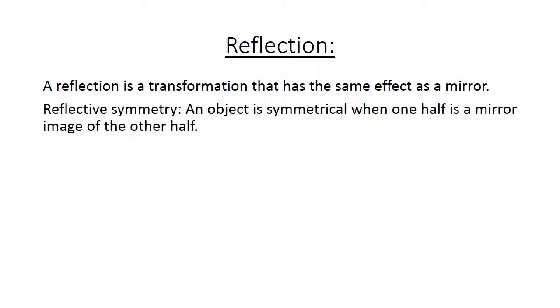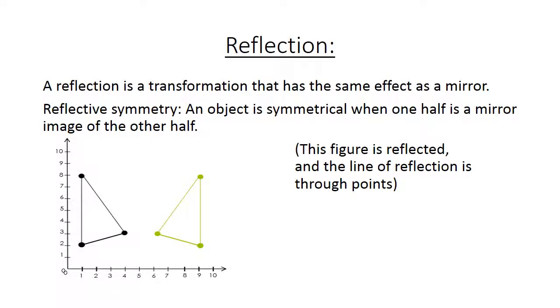Reflection: A reflection is a transformation that has the same effect as a mirror. Reflective symmetry: An object is symmetrical when one half is a mirror image of the other half. This figure is reflected, and the line of reflection is through points. If you look at the green figure there, it has been reflected.